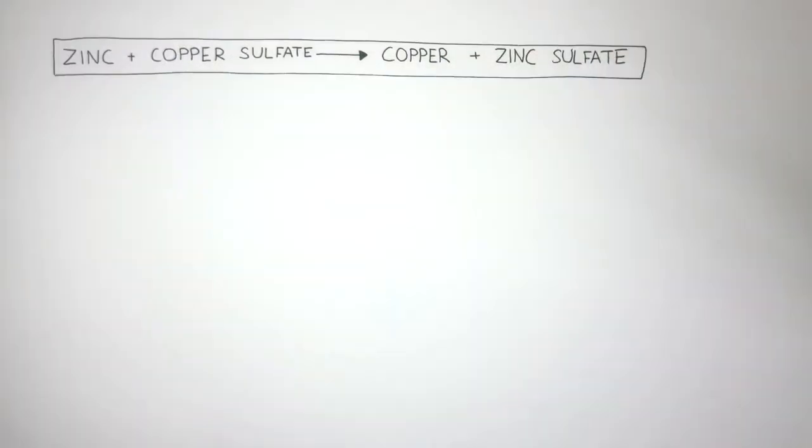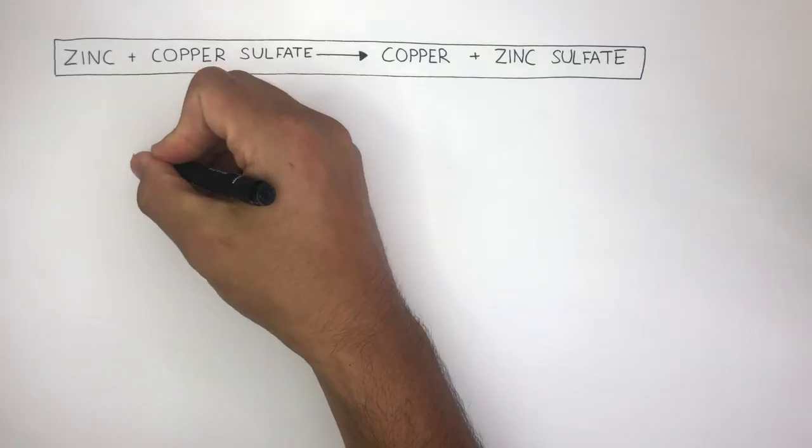This is an example of a displacement reaction where zinc is more reactive than copper. So zinc displaces copper from its compound, forming zinc sulfate and copper.